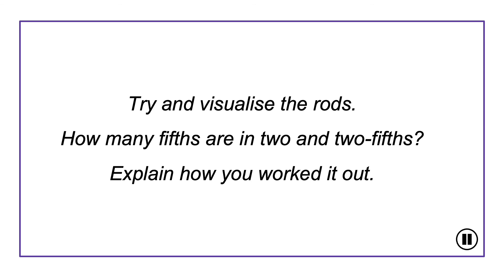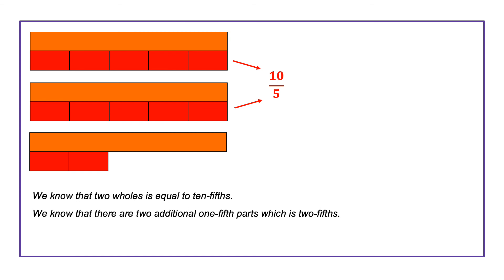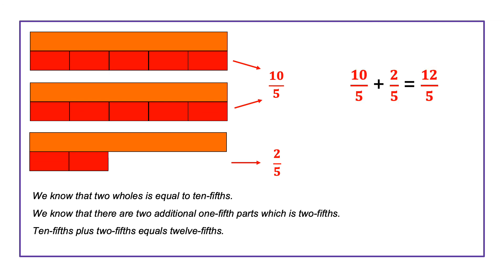Try and visualise the rods. How many fifths are in two and two-fifths? Explain how you worked it out. We know that two wholes is equal to ten-fifths. We know that there are two additional one-fifth parts, which is two-fifths. Ten-fifths plus two-fifths equals twelve-fifths. So we can say that two and two-fifths is equal to twelve-fifths.